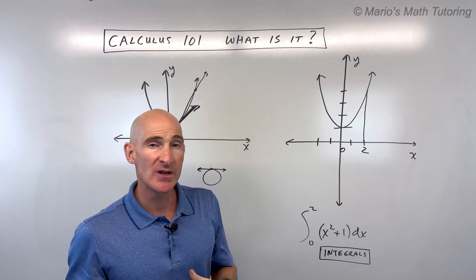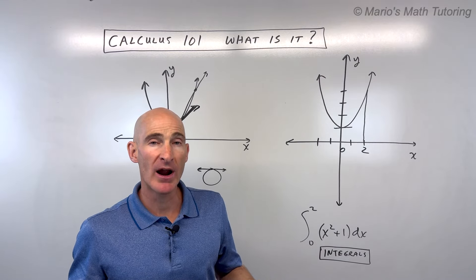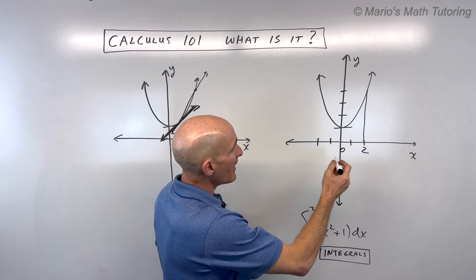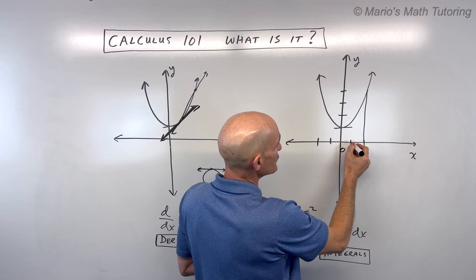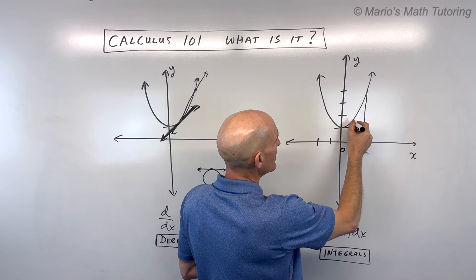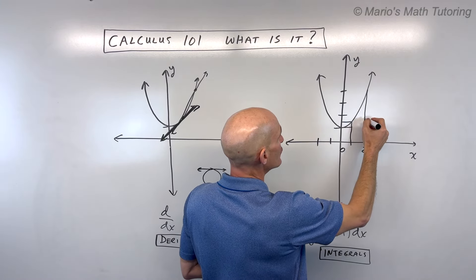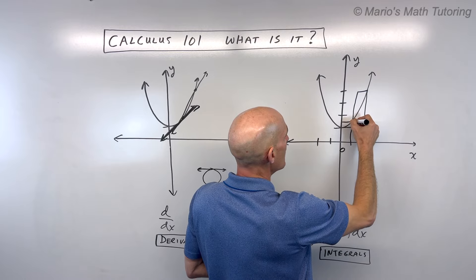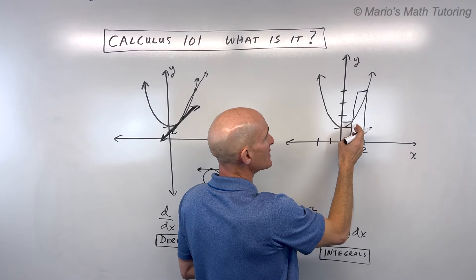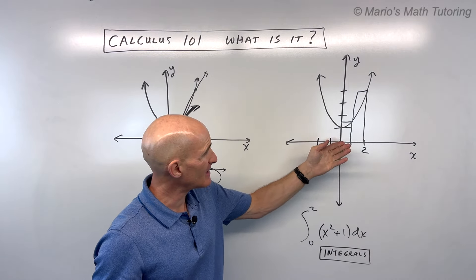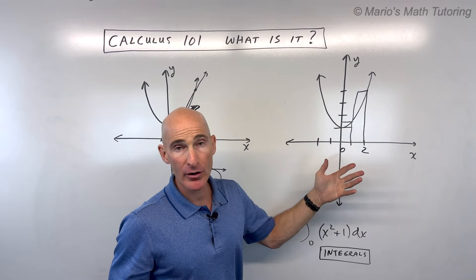But what I want to show you is you can do something called an approximation, where you could divide this region up into rectangles. For example, if I was to draw a rectangle like this, and draw a rectangle like this, I could find the area of each of these rectangles, add them together, and get kind of an approximate area of that region.